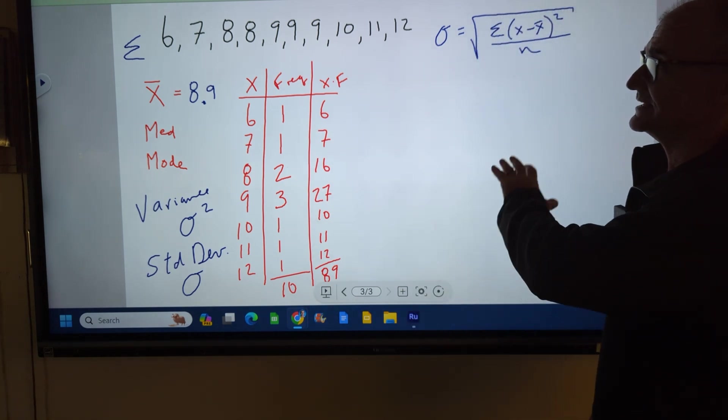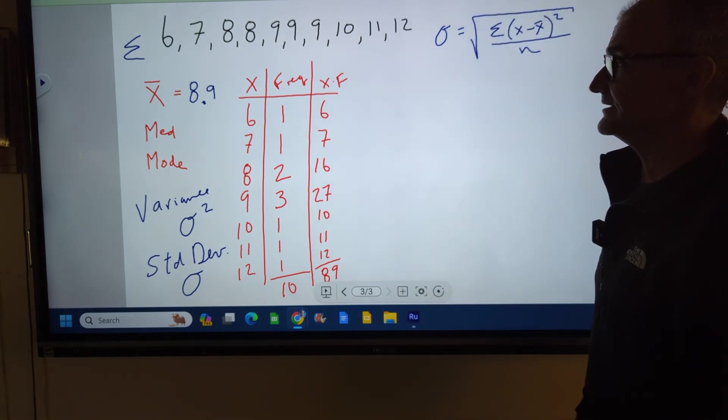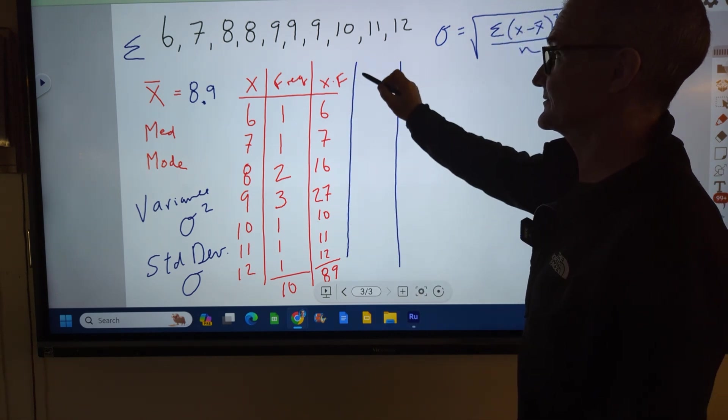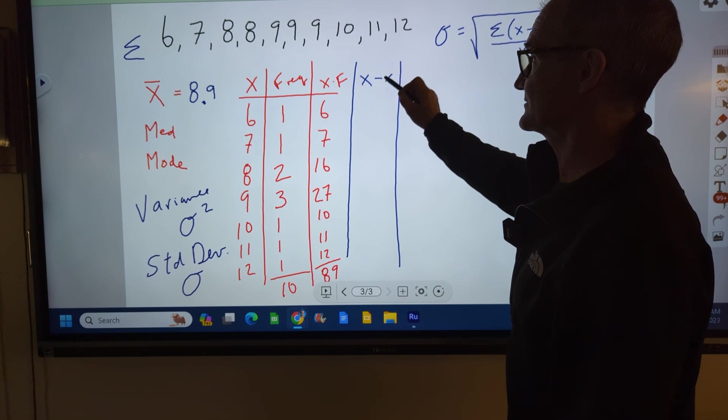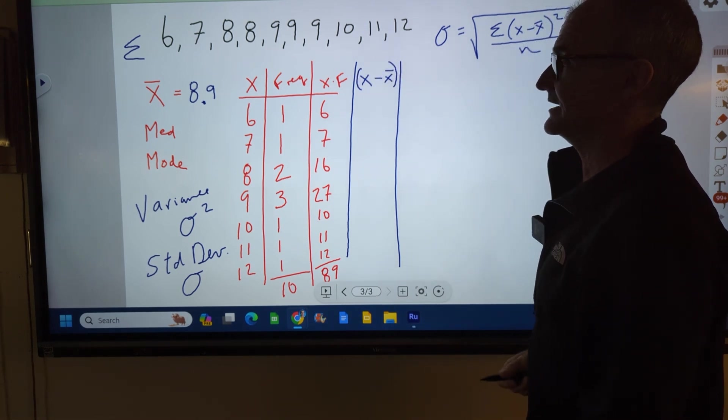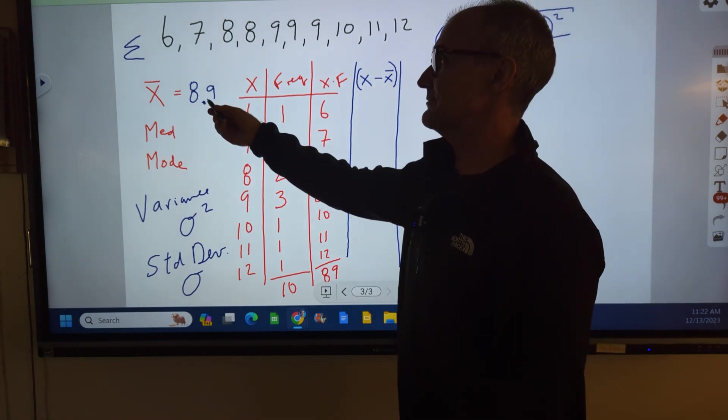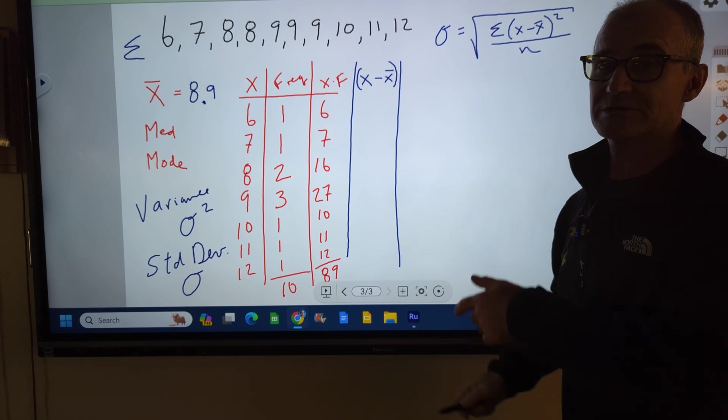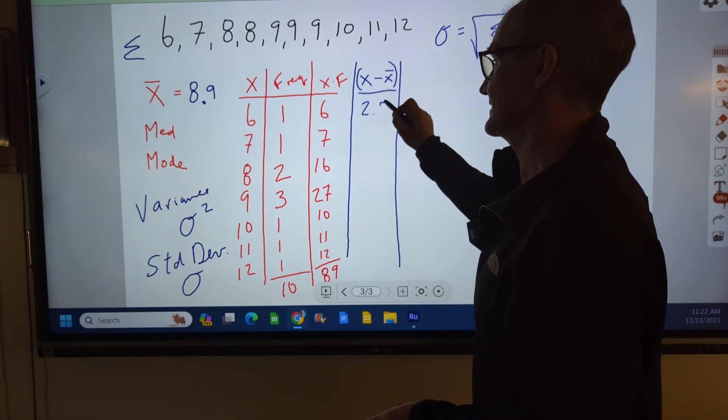All right, so let's set up and build this spreadsheet here. The first thing I want to do is create a new column. And this new column is going to be x minus x̄. So the actual value minus the average value. 6 minus 8.9 is 2.9. We're going to square it so we don't really care if it's positive or negative.